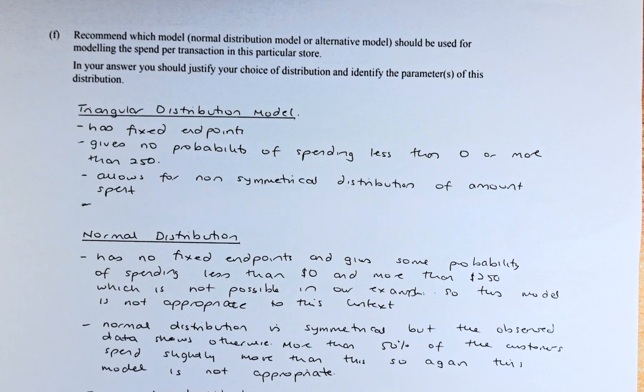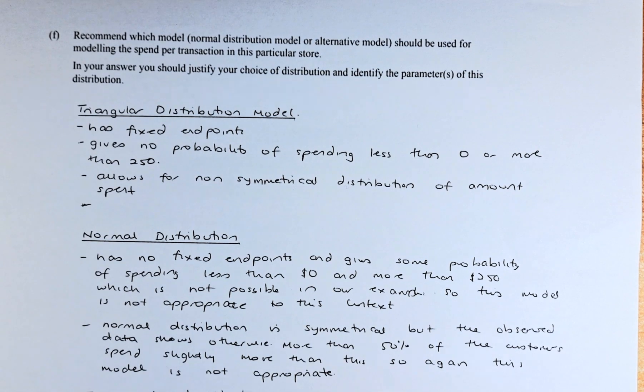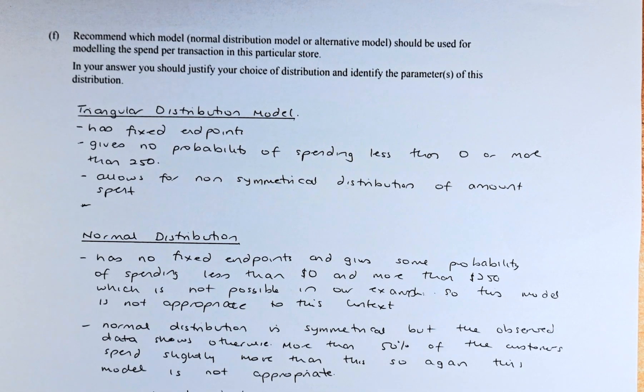The second point, the triangular distribution allows for non-symmetrical distribution of amount spent. Because if you look at the observed probability, it is more non-symmetrical than symmetrical.